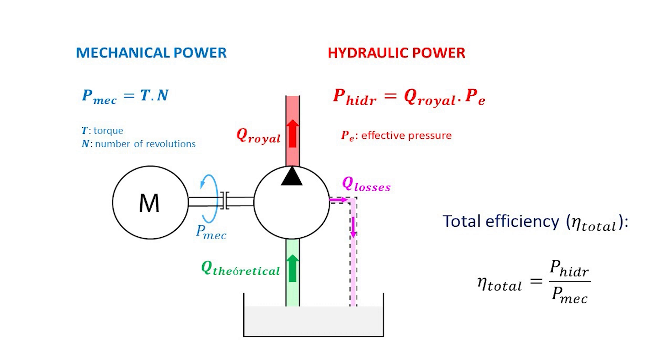The mechanical power can be obtained by multiplying the torque generated by the engine by the number of revolutions. And the hydraulic power is equal to the effective volumetric flow, or real flow, multiplied by the effective or relative pressure at the pump outlet. So from there we have another relation to obtain the total efficiency of the pump.